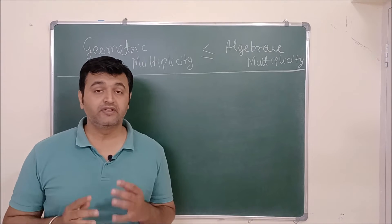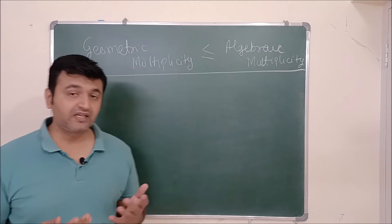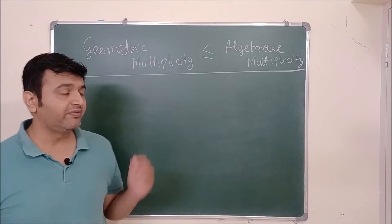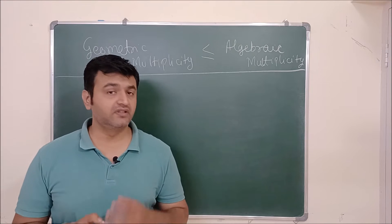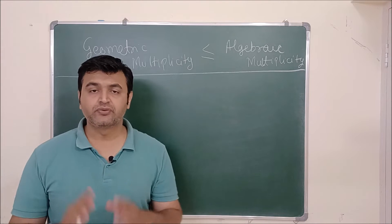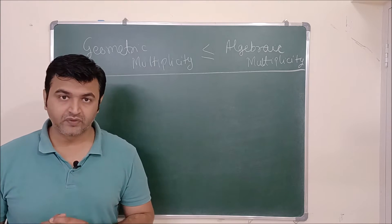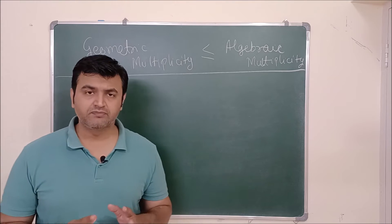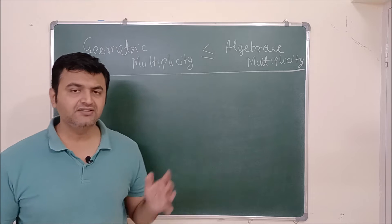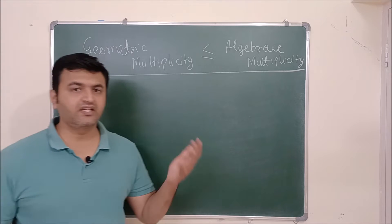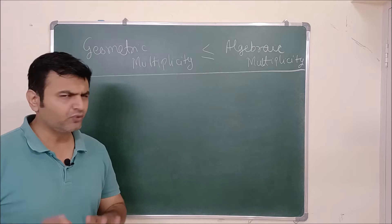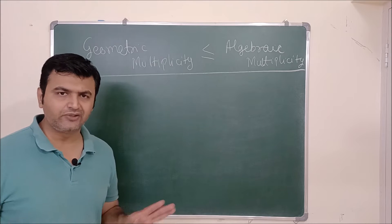In the last lecture we talked about the concept of algebraic and geometric multiplicity, and I stated the relation that geometric multiplicity is always less than or equal to algebraic multiplicity, but I didn't prove it. Today I'm going to give you the proof. For the sake of completion, let me recall the definitions of these two terms, and then we will go for the proof. The proof is very simple — it won't take more than 3 to 4 minutes.